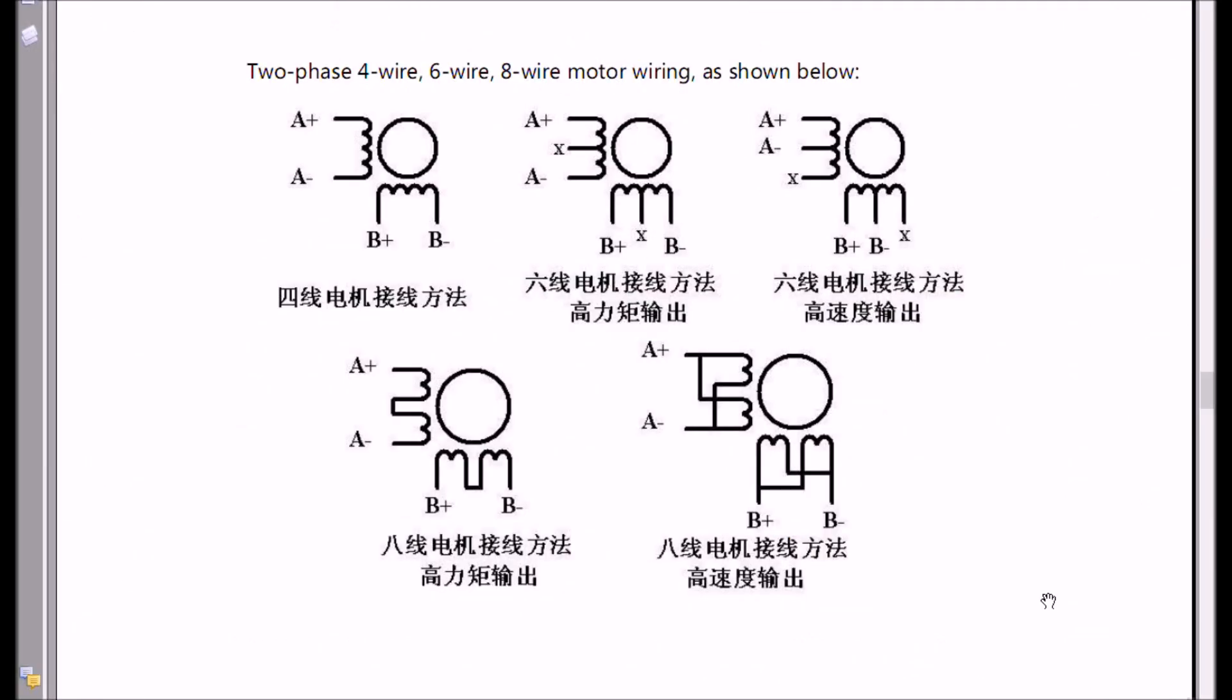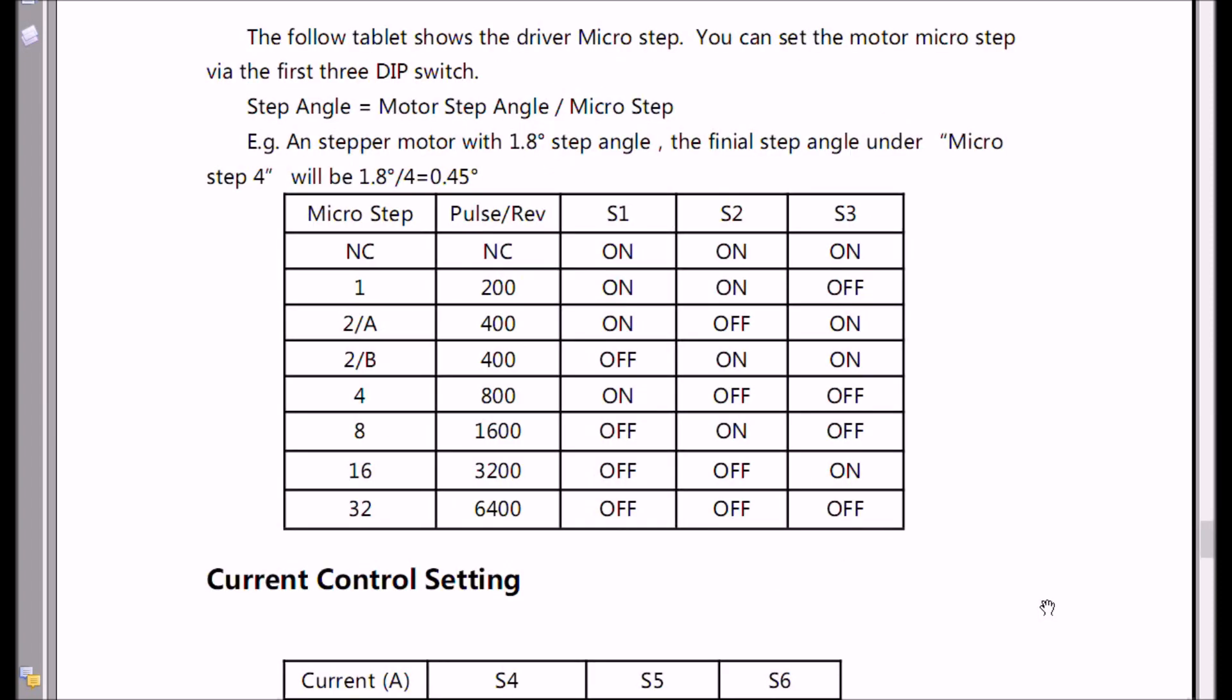All right, we're looking at the TB6600 factory manual again. Of course, this is illustrating various connections for stepper motor windings. My stepper motor happened to be a unipolar stepper motor, but I connected it up as shown here with the center taps disconnected. Of course, here is your unipolar bipolar stepper motor and various other configurations and combinations.